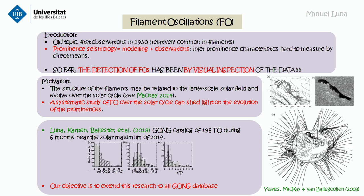In 2018, we made a catalog of this kind of oscillation during solar maximum — over six months in 2014 — and we found a lot of filament oscillations. This is the distribution of the velocities. The most relevant thing is this plot: we have the number of events as a function of the period, and we see a strong peak at 60 minutes. We wonder if this average period changes during the solar cycle.